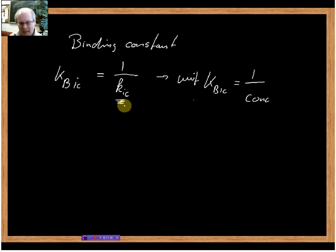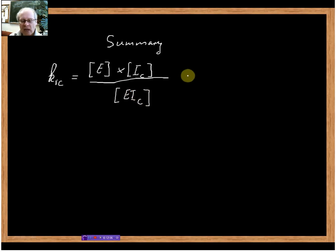Now let me quickly summarize. We defined KIC as the dissociation constant which is given by enzyme times inhibitor concentration divided by the concentration of the enzyme-inhibitor complex. The unit is concentration, and we said the smaller KIC, the stronger the inhibitor binds to the enzyme.